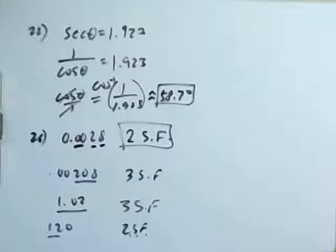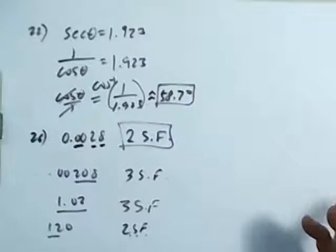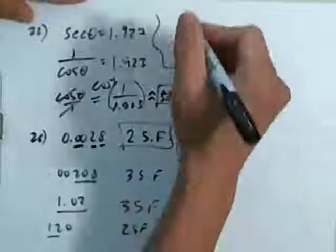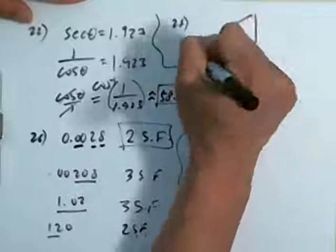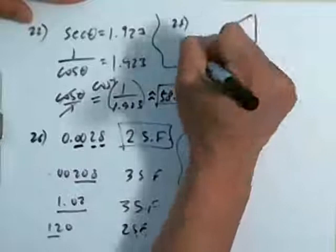Number 28 says: the following problem refers to right triangle ABC. In each case, find all missing parts. Here's angle A, angle B, and of course angle C is always the 90 degree angle — that's how we label it. Little a is 24.3 — that's the side opposite angle A. Little c is 48.